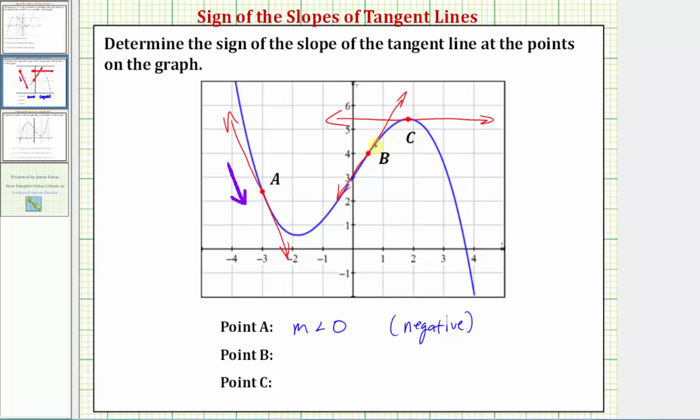Now looking at the tangent line at point b, notice how from left to right the line is going uphill, which means the slope is positive. So below at point b we'll say slope m is greater than zero, which again means the slope is positive.